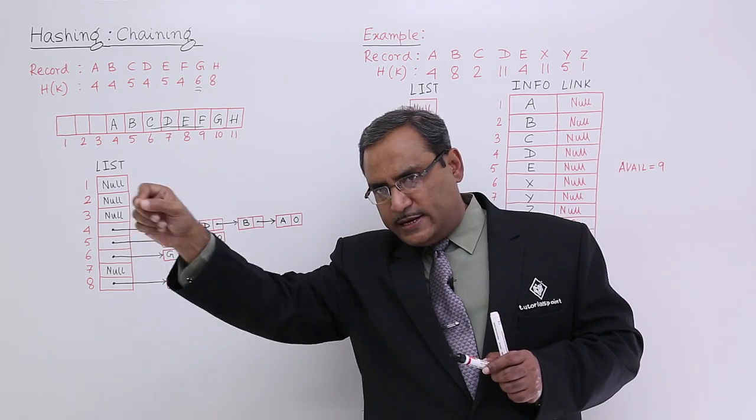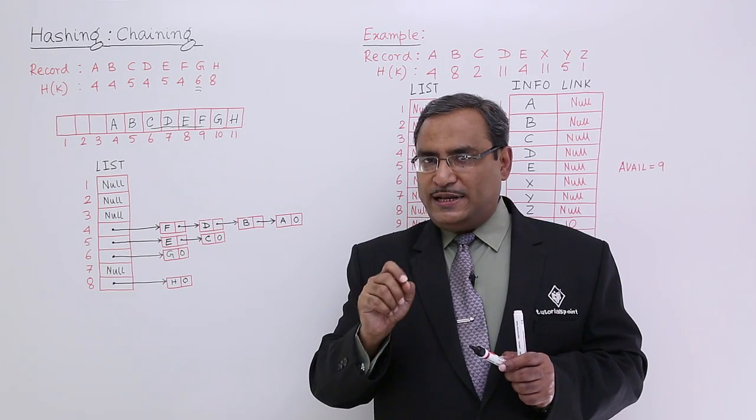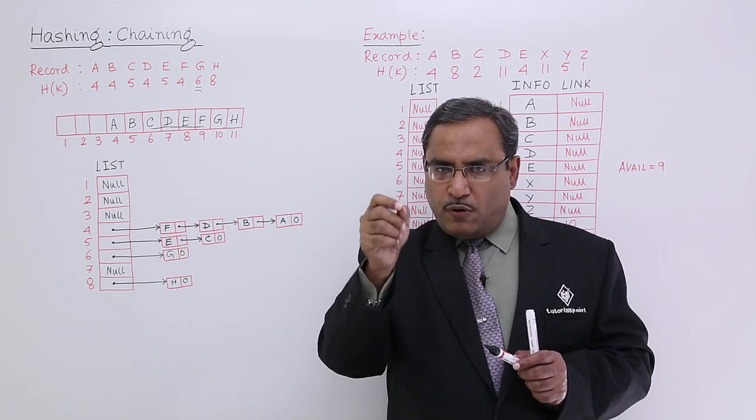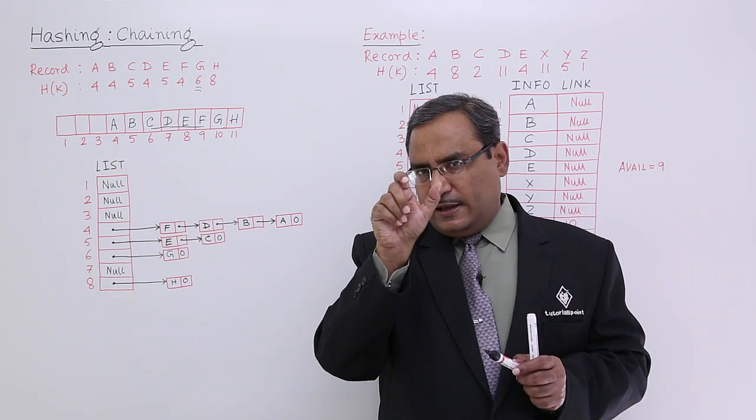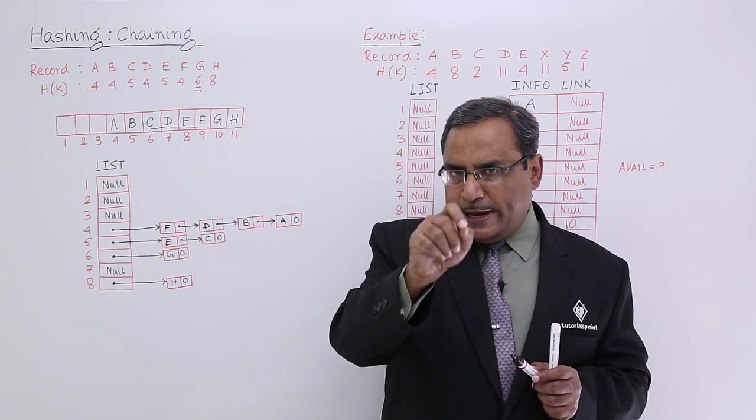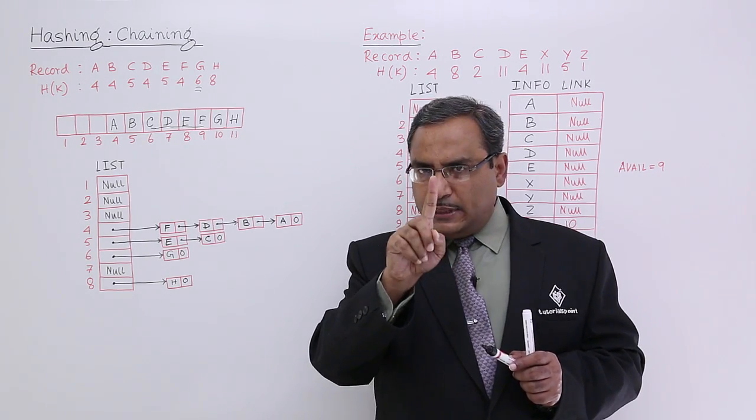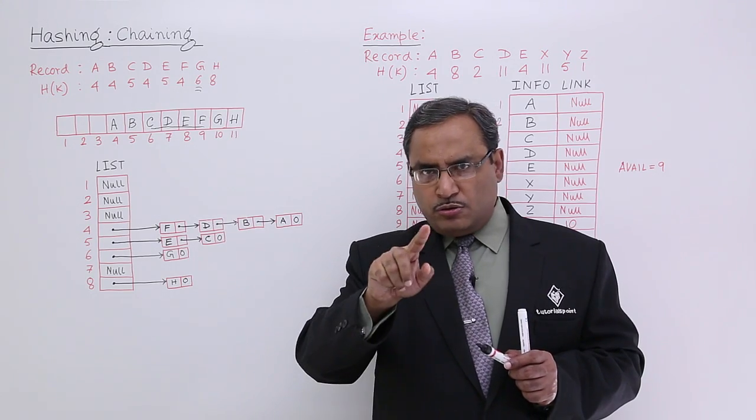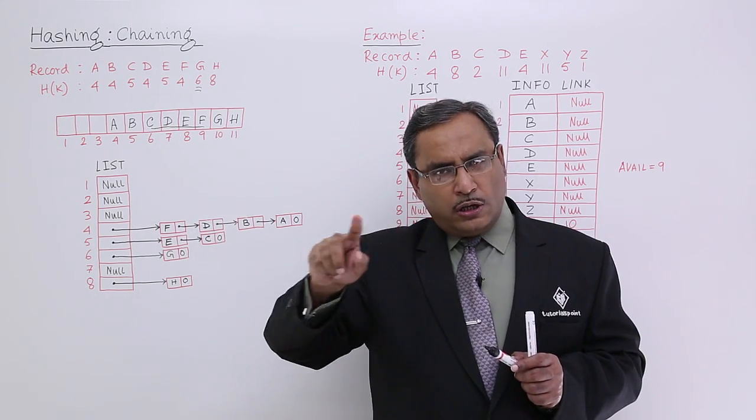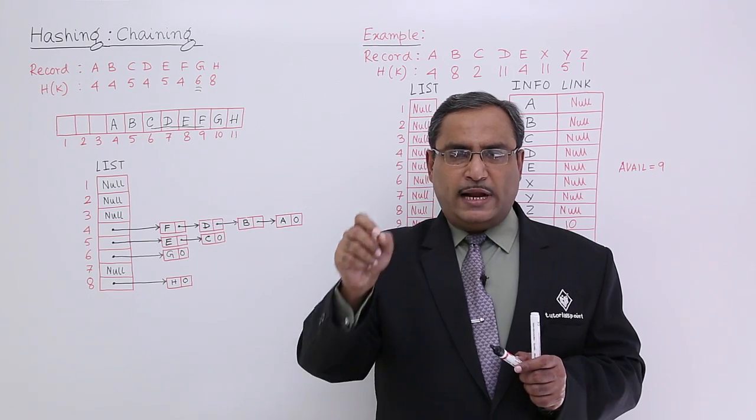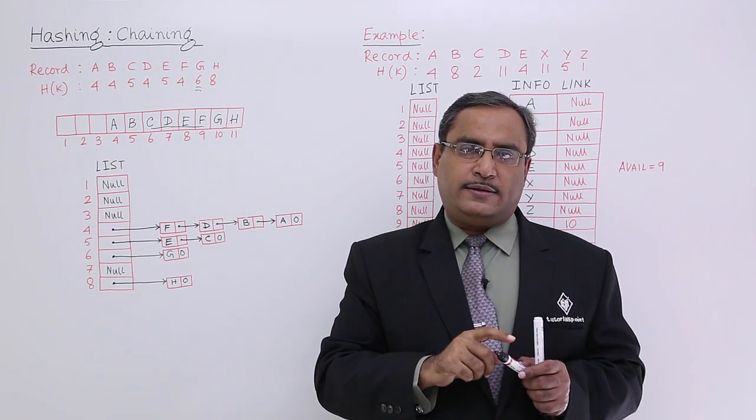But if you go for the prepend, that means if you insert that node at the beginning of the linked list, you are having the constant time algorithm. It need not traverse the linked list, all nodes, it need not traverse. So that can easily be put at the head.